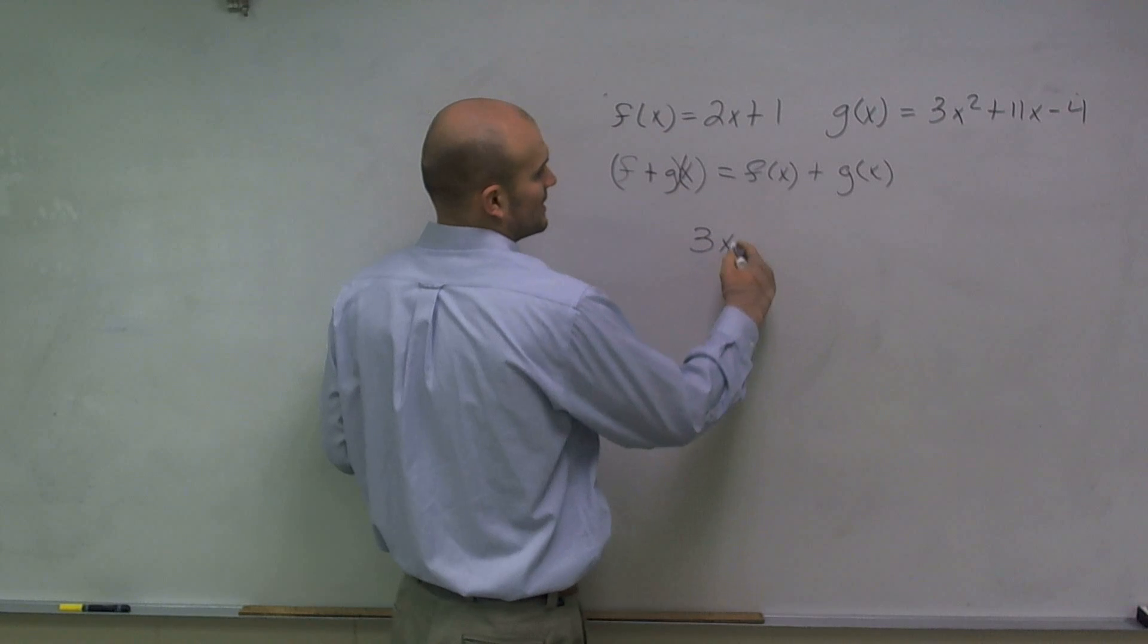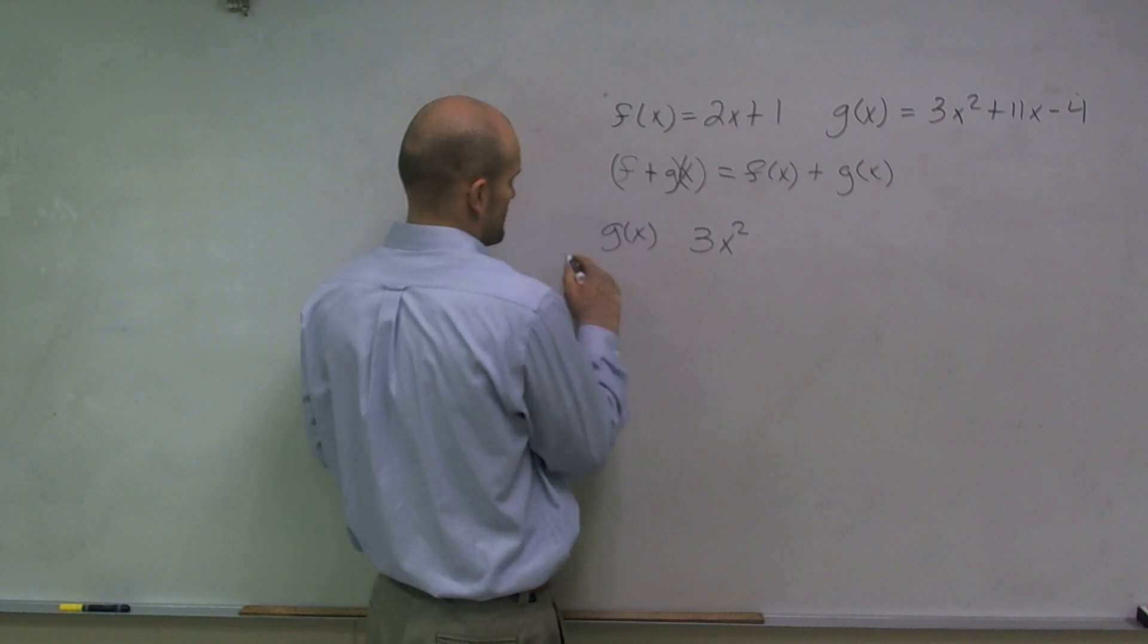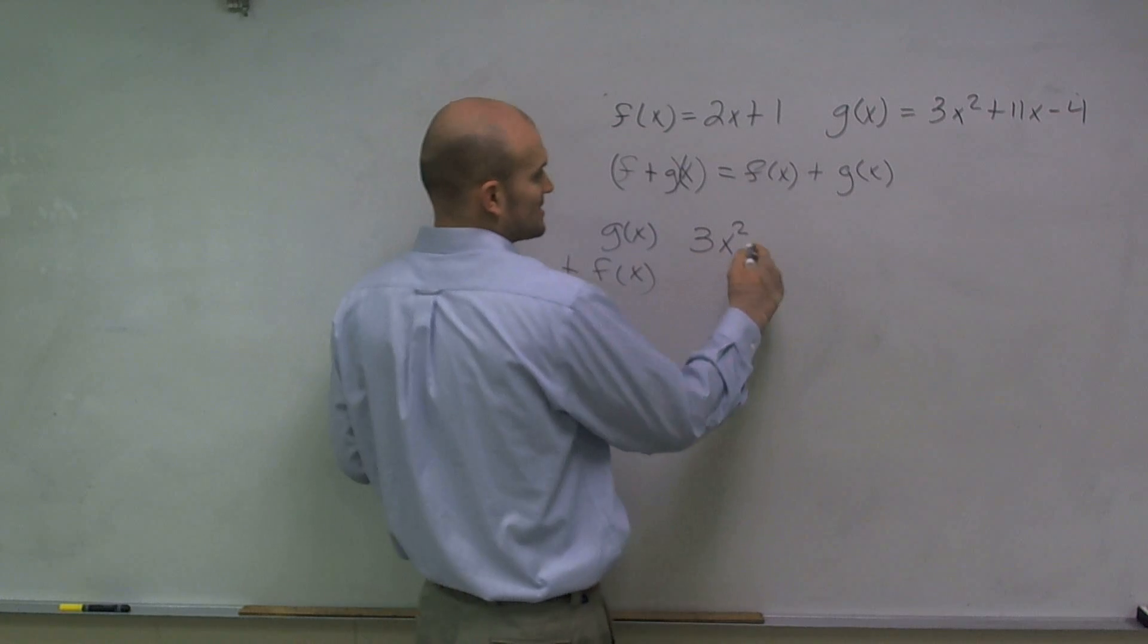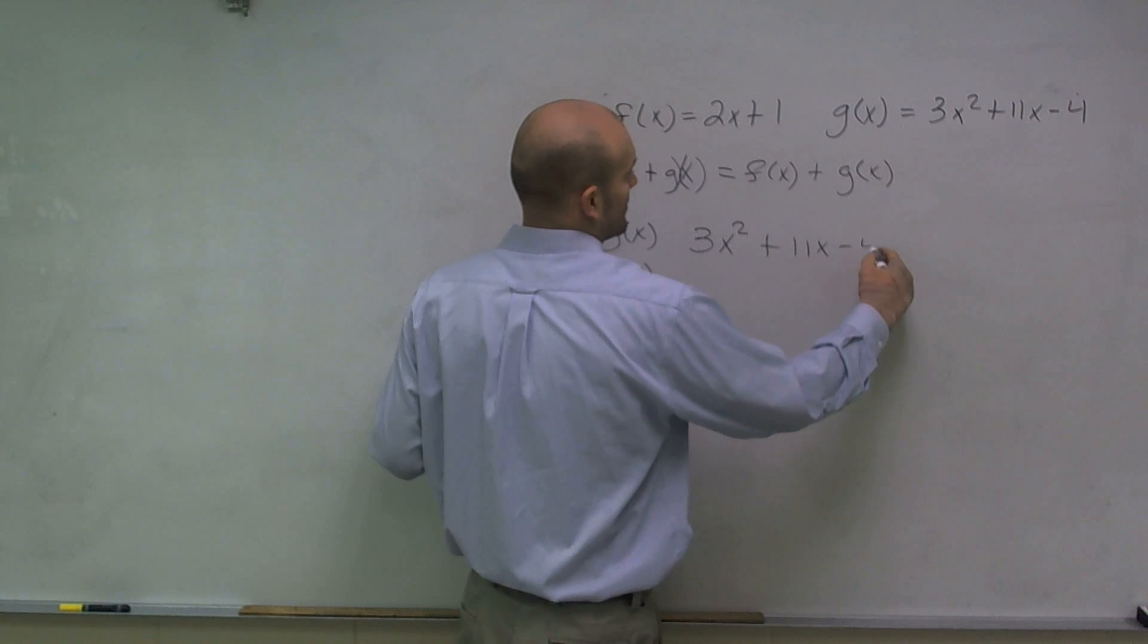I'm going to write this. I'll write g of x first. So if I wrote g of x plus f of x, g of x is 3x squared plus 11x minus 4.